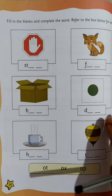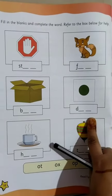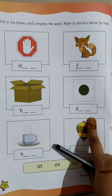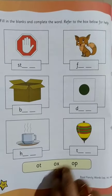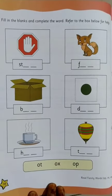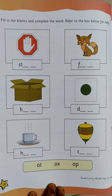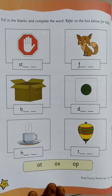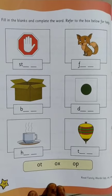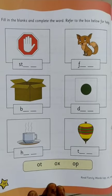So now what do we have to do? We have to open our Little Thinker English to page number 38. Right children? Once we open our book, let's see what we have to do. Fill in the blanks and complete the word. Refer to the box below for help.